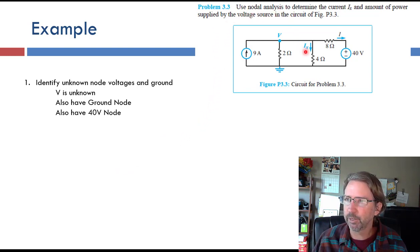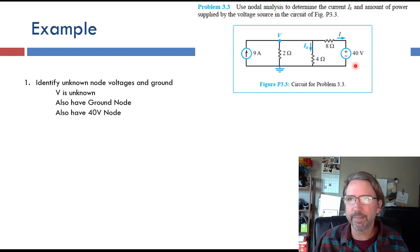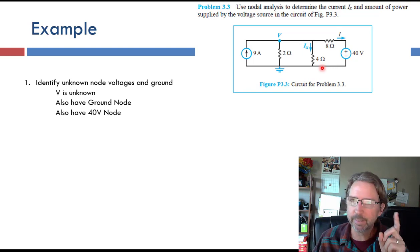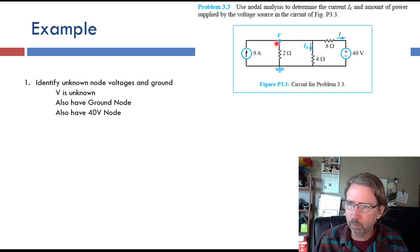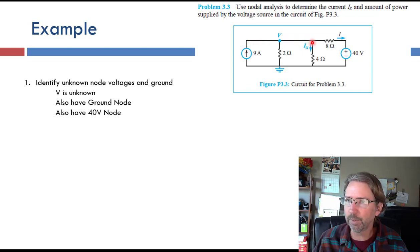Here's an example where we do node analysis and post-processing. We use node analysis to find current IX and the power supplied by the 40-volt voltage source. The problem isn't asking for node voltages directly, so we'll do node analysis first and then find the requested quantities as a post-processing step. The ground node is at the bottom. The top-right corner is 40 volts because it's connected to the 40-volt source tied to ground. The large top node is connected to a current source, so its voltage is unknown — that's our one unknown voltage V.